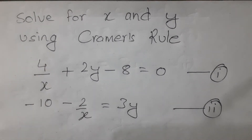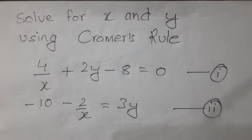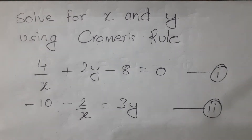In Cramer's rules, we will learn how to solve the system. This is one of the methods of the royal matrix chapter. This is one of the most important questions.